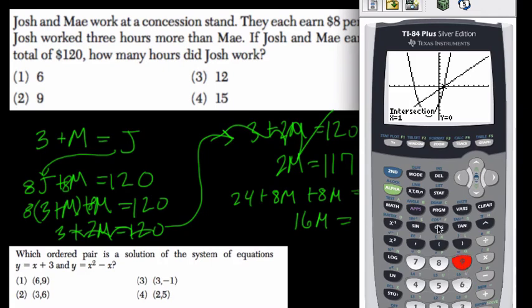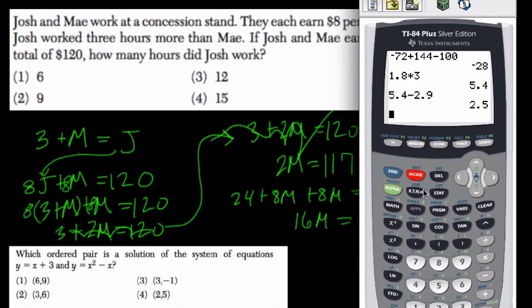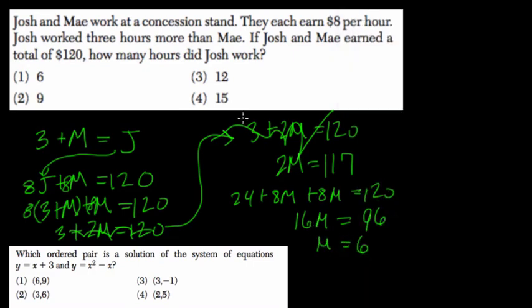96 divided by 16, that's 6. So what's that mean? Well, Mae worked 6 hours and Josh worked 3 more than that. So Josh worked 9 hours, choice 2.